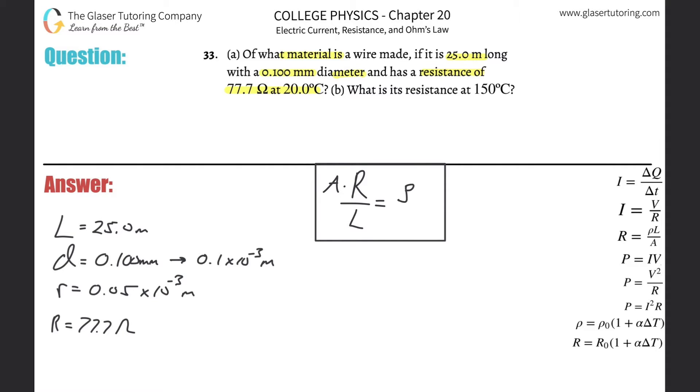So essentially, it's the cross-sectional area multiplied by the resistance divided by the length. So let's get to it. The cross-sectional area, is this wire a circle? Does it say? Well, no, but it tells us the diameter. So hopefully they're not telling us the diameter of a square because that would be strange. So this would be pi times the radius squared. Pi R squared. That's the formula for area of a circle.